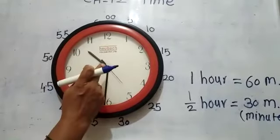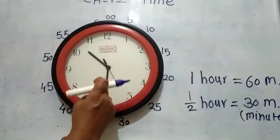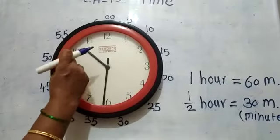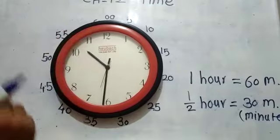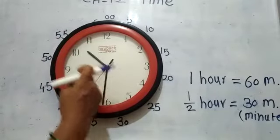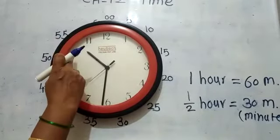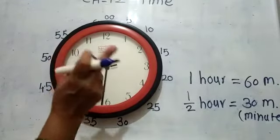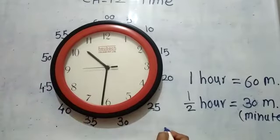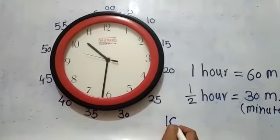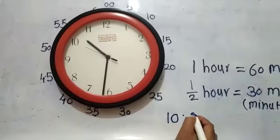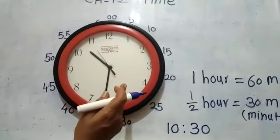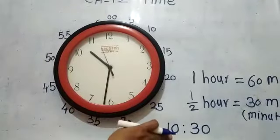Look children. Here the minute hand is at 6 and the hour hand is half past 10 — or 30 minutes after 10. This is also written as 10:30 — half past ten.